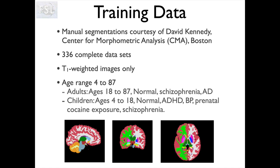In order to do that we have training data that's been supplied to us by the Center for Morphometric Analysis in Boston, and that comprises 336 complete datasets which have been very carefully manually annotated. They're manually annotated by people in their lab who spend a long time learning how to do that, and then have to pass a test in terms of how consistent they are with previous labelers before they can start labeling new unseen brains. So we know this is very good, high quality data.